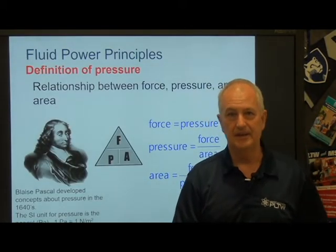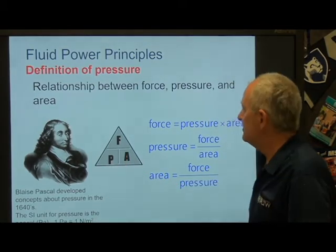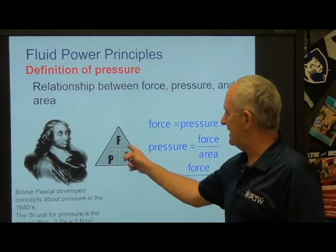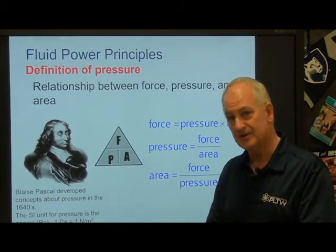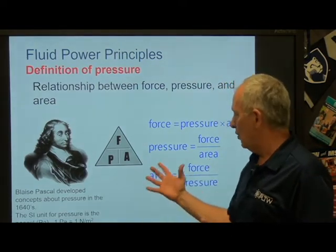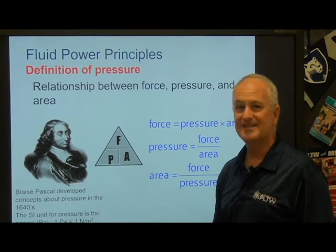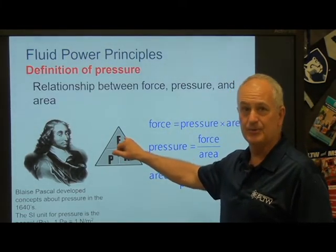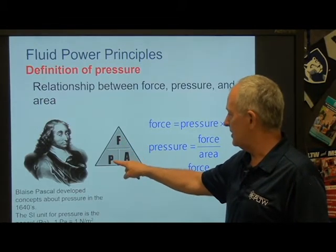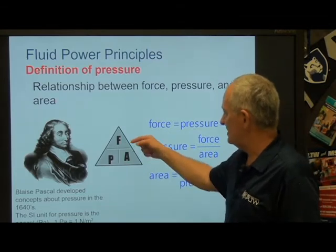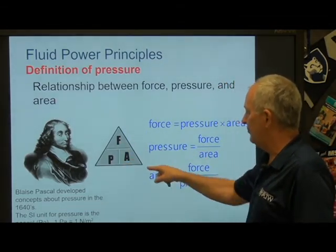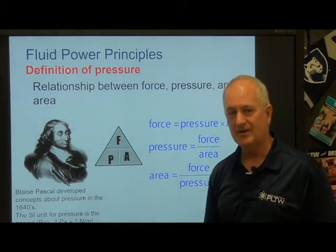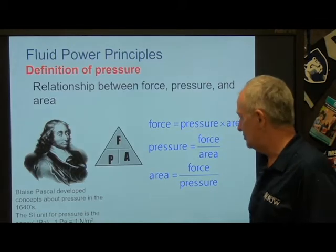Here's where I really wanted to get today: Blaise Pascal, from the 1600s, worked with fluid power and came up with this formula. That triangle should look familiar — similar to Ohm's Law for electricity where voltage equals current times resistance. Pascal came up with the idea that force in a fluid system equals pressure times area: F = P × A. You can rearrange it as P = F ÷ A, or A = F ÷ P. We'll use these calculations to solve some problems in a moment.